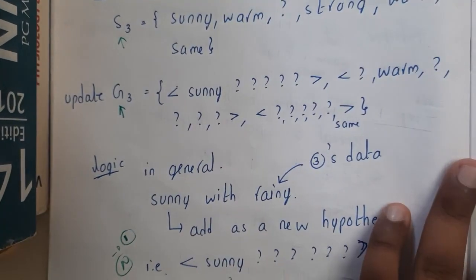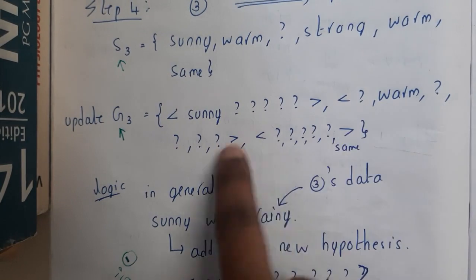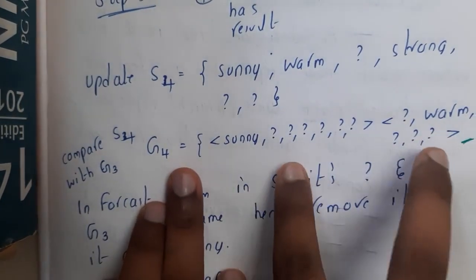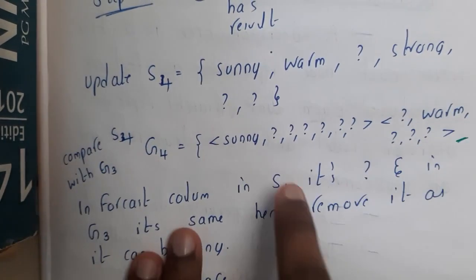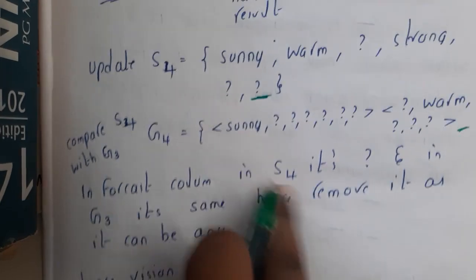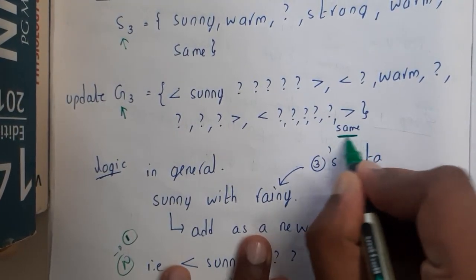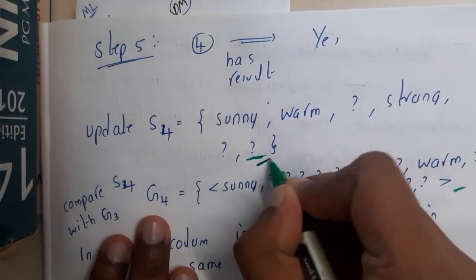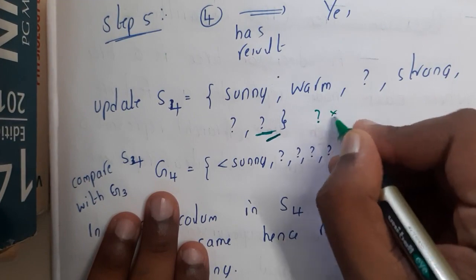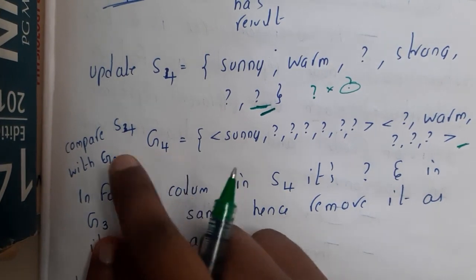The issue you all identified is: in G3 we have three parameters (three hypotheses), but when I wrote G4, I wrote only two. Most of you are asking how I updated it. In the forecast column — the last column — in S4 we have question mark, and in G3 it is the same. In G3 we have specific information, whereas in G4 you wrote question mark. Question mark multiplied by anything is still question mark, so that last hypothesis becomes question mark entirely. That is why you can just remove it — that is the logic for how G3 became G4 with only two parameters.